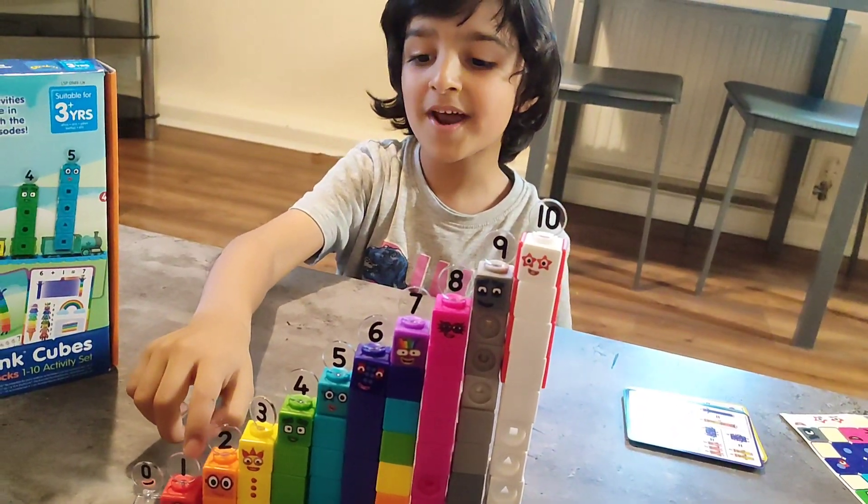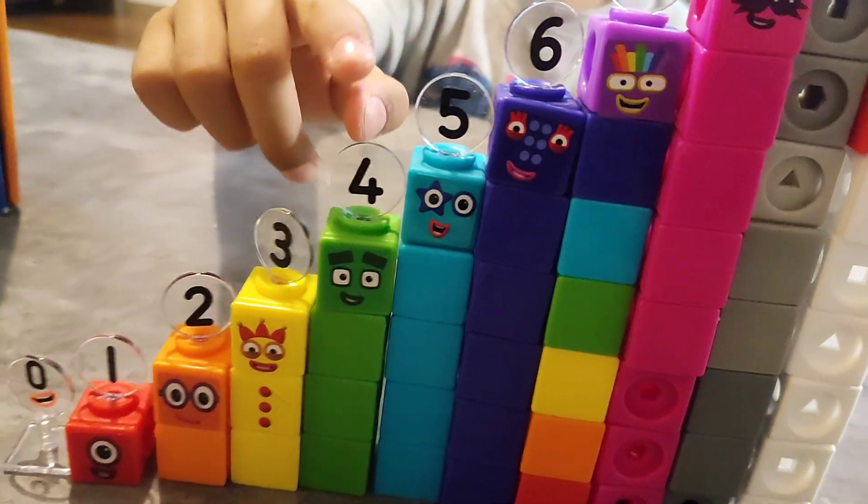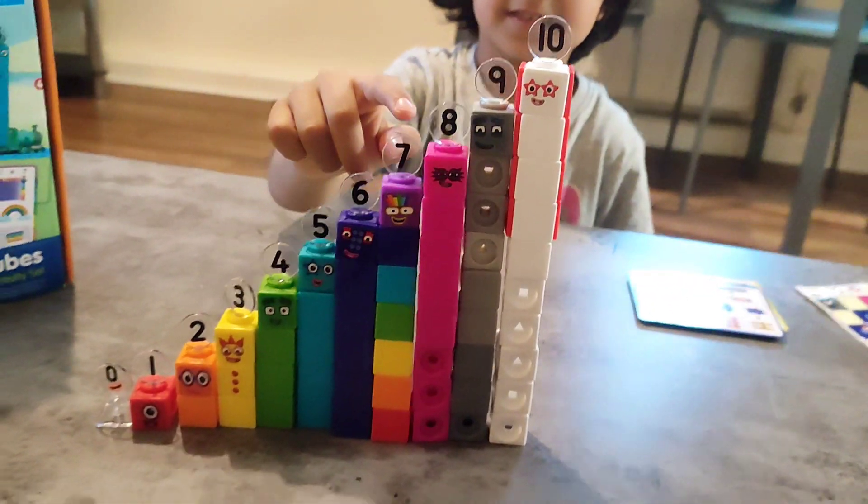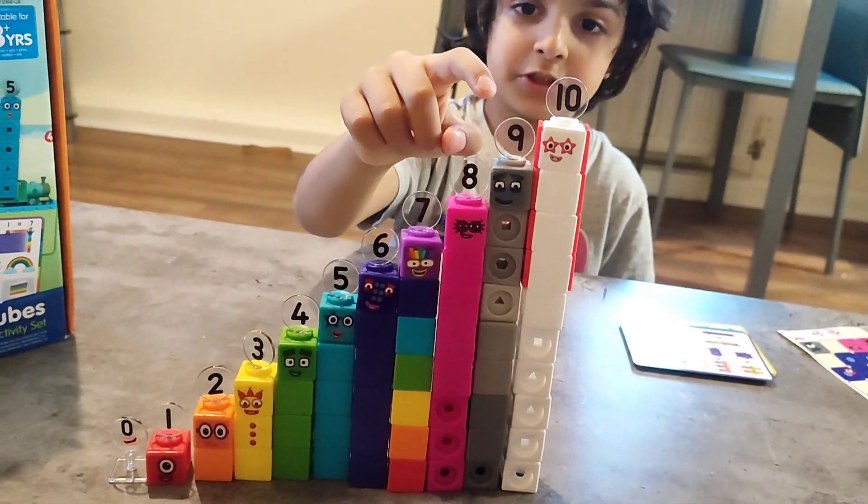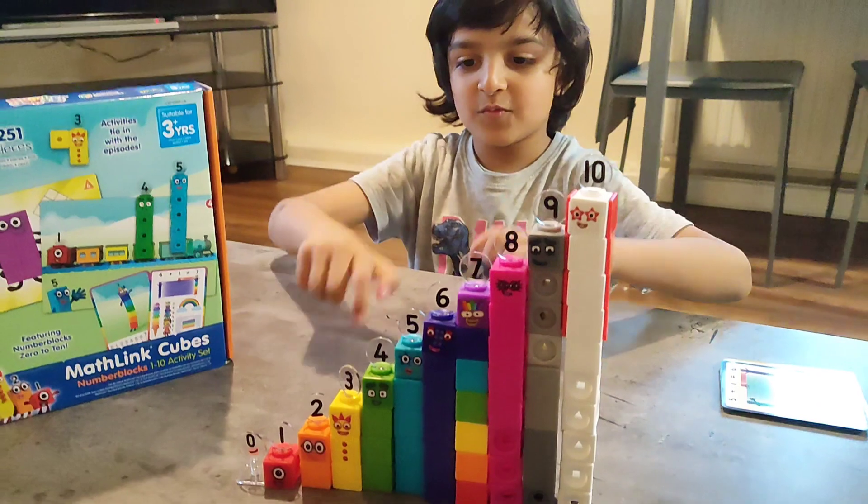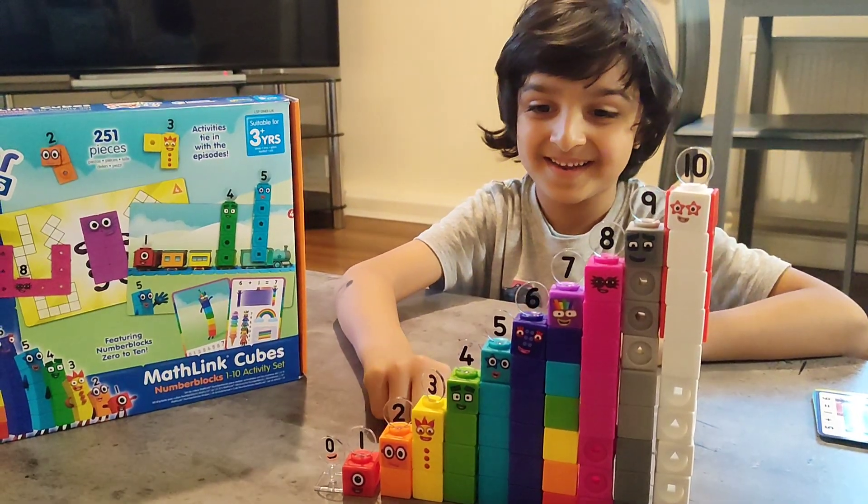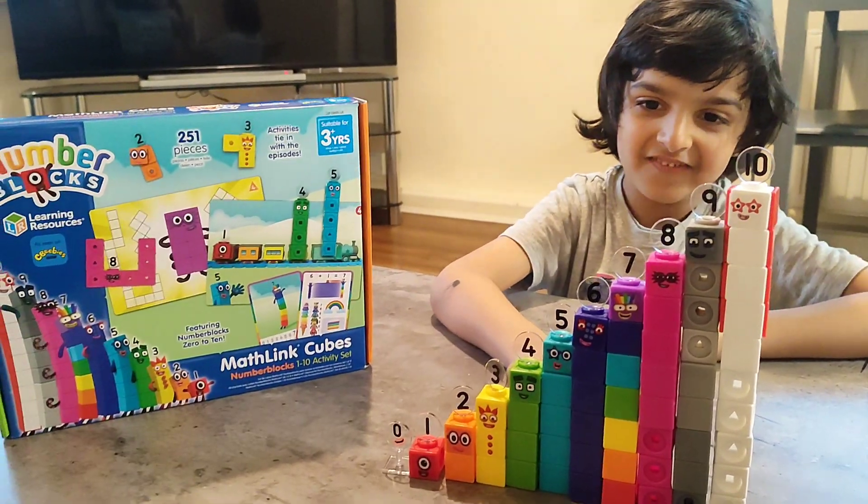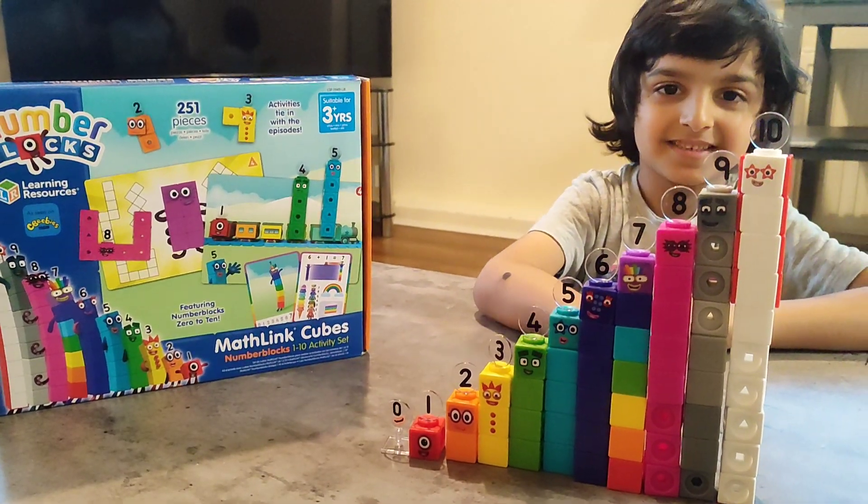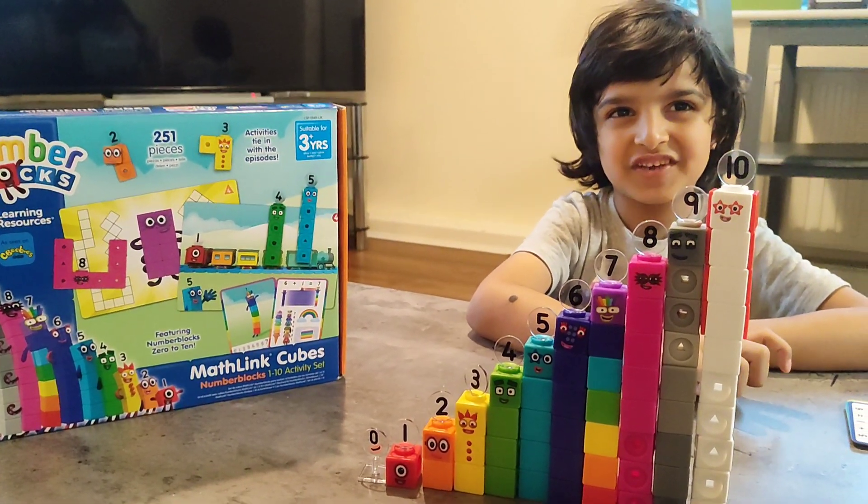So I have built all of the number blocks from 0 to 10. 0, 1, 2, 3, 4, 5, 6, 7, 8, 9, 10. 1, 2, 3, 4, 5, 6, 7, 8, 9, 10. 10 equals 55.